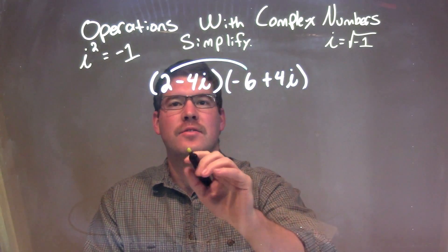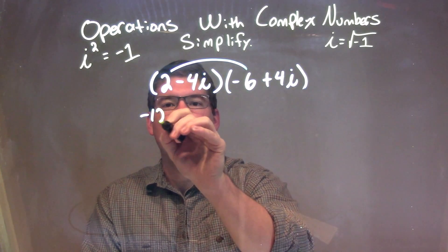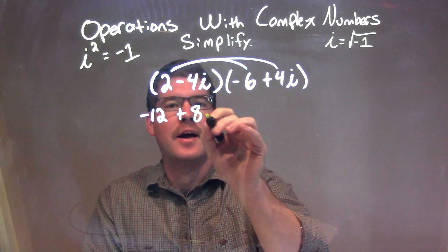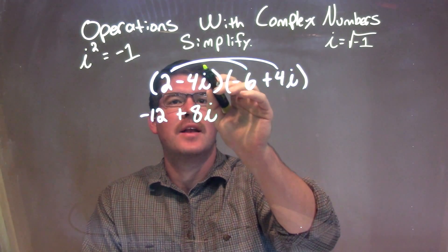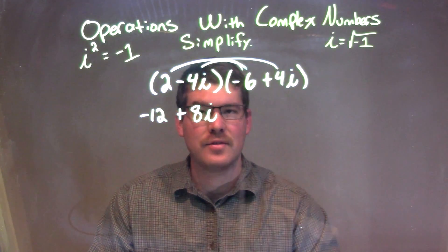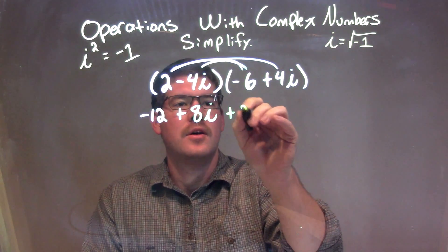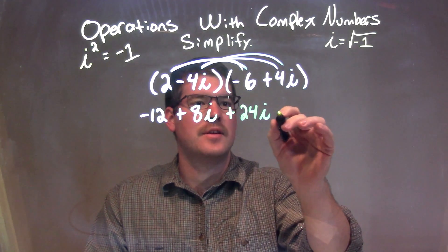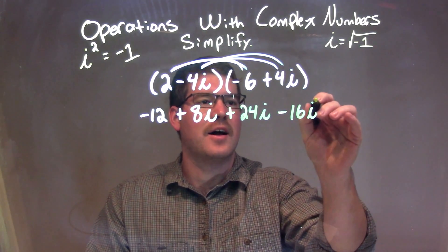2 times negative 6 is negative 12, and 2 times 4i is 8i, so we're going to plus 8i. Then we have negative 4i times negative 6, which is positive 24i, and then negative 4i times positive 4i is negative 16i squared.